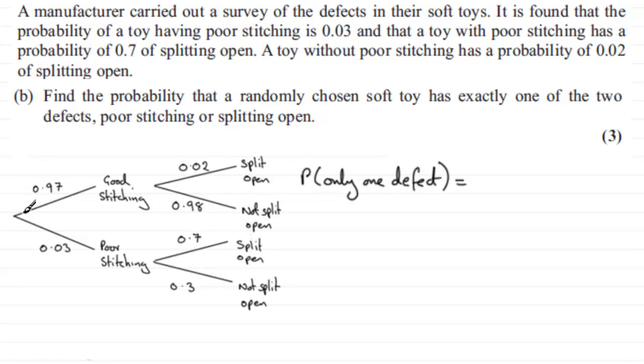You could have good stitching, but then the defect is that it splits open. So you're going to have 0.97 multiplied by 0.02.